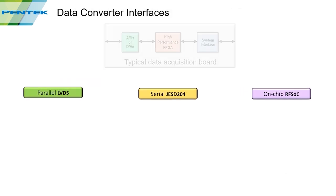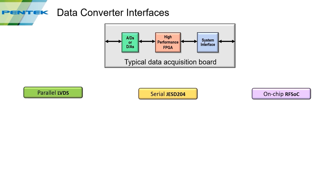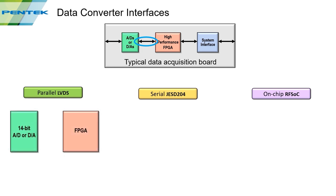In a typical data acquisition and FPGA processing system, you have an ADC or DAC converter interfaced to the FPGA, and in many systems there's another interface to bring data on and off the card — for storage or additional processing. The key focus is the interface between the data converter and the FPGA processor. For a 14-bit ADC, a parallel interface means 14 pairs of signals running between the converter and the FPGA, one for each bit, accompanied by a clock pair.